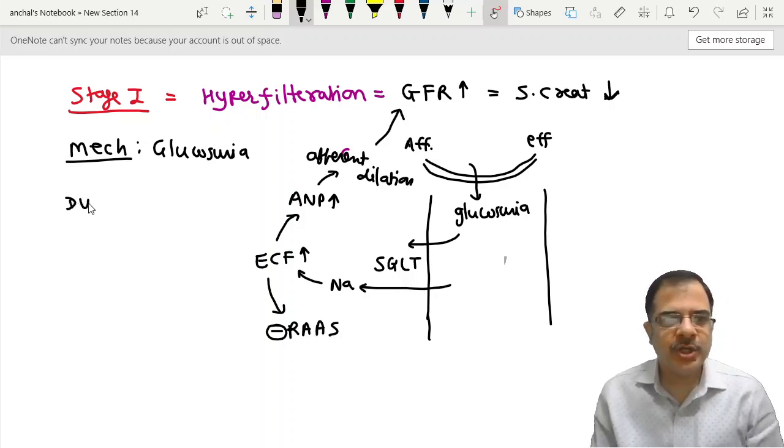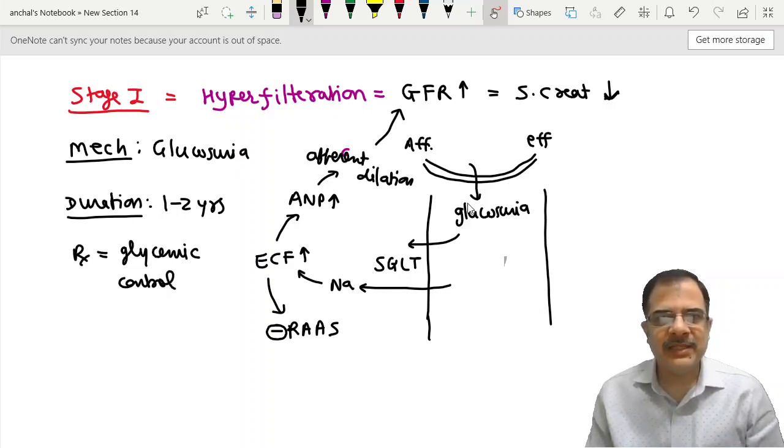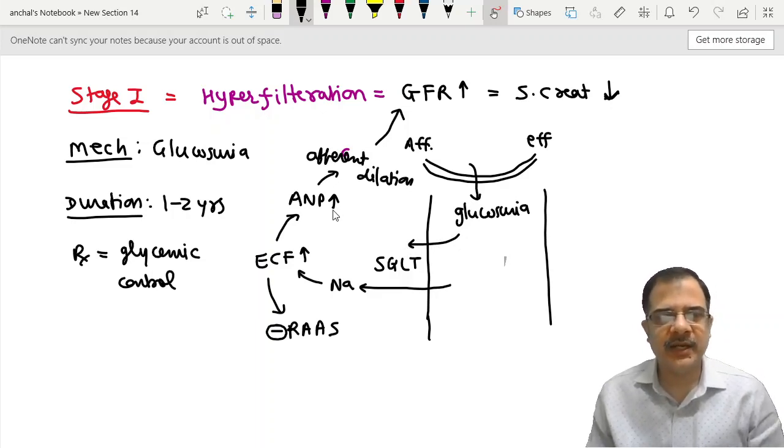What is the duration after the diabetes diagnosis? The duration after the diabetes diagnosis of stage 1 is 1 to 2 years of uncontrolled sugars. What is the treatment? Treatment is glycemic control. So if we do glycemic control, glucosuria will be less and hence this mechanism will be less.